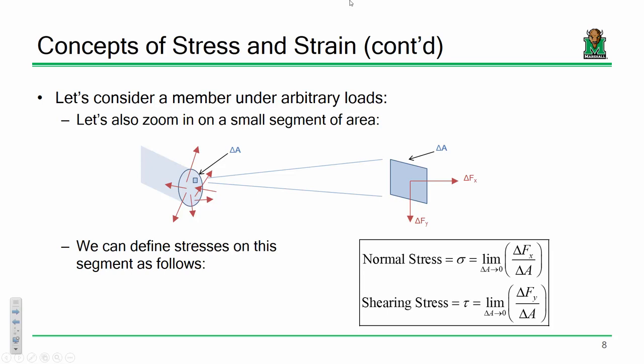You probably remember normal stress and shear stress from Deformable Bodies. In here we're really more interested in the normal stress — that's really all we care about. Take an element, push on it; take an element, yank on it. If I'm yanking on it with 100 pounds and it has a cross-sectional area of two square inches, that's 50 PSI. That's what we're interested in.